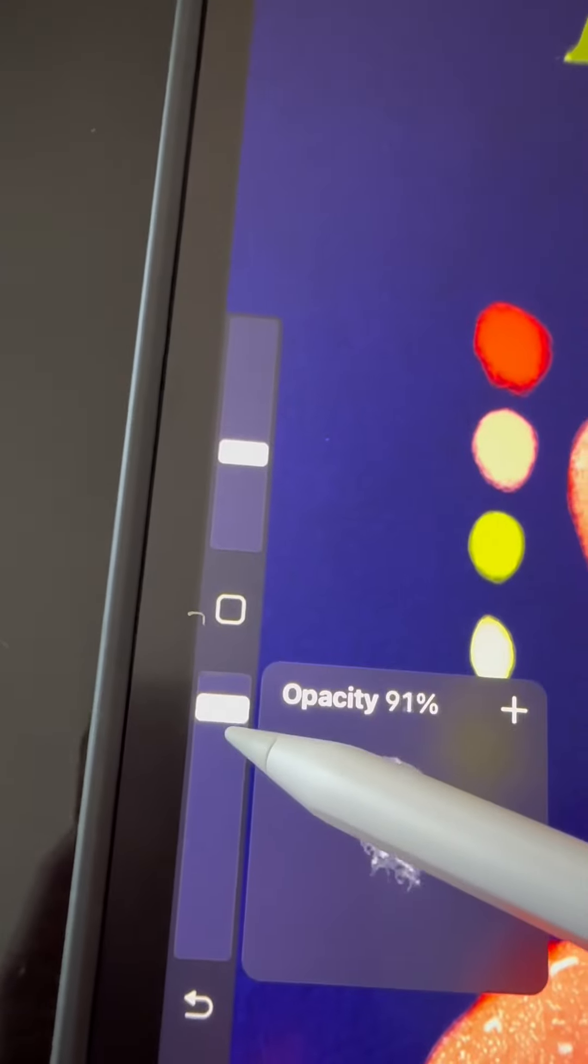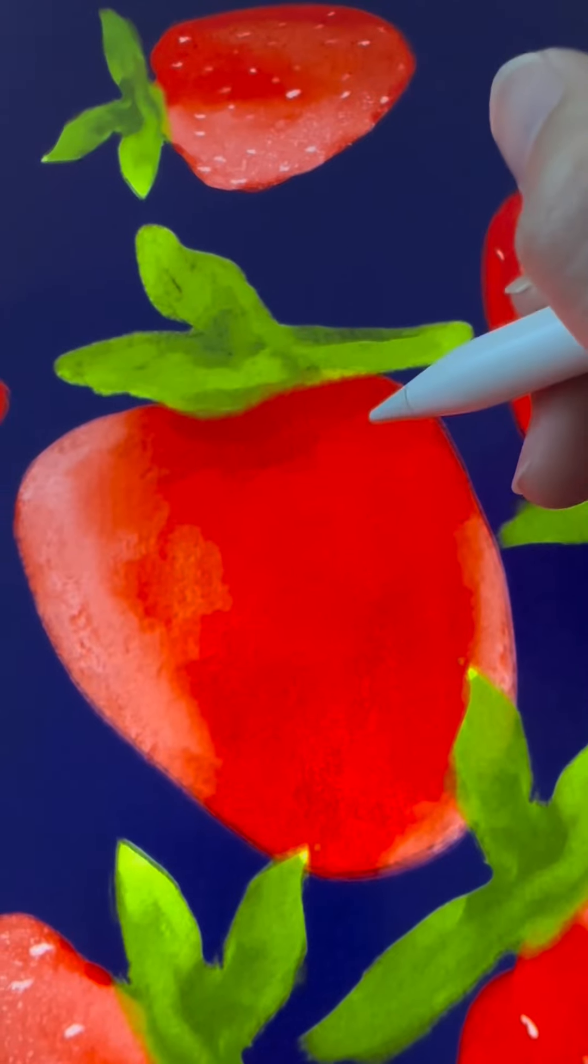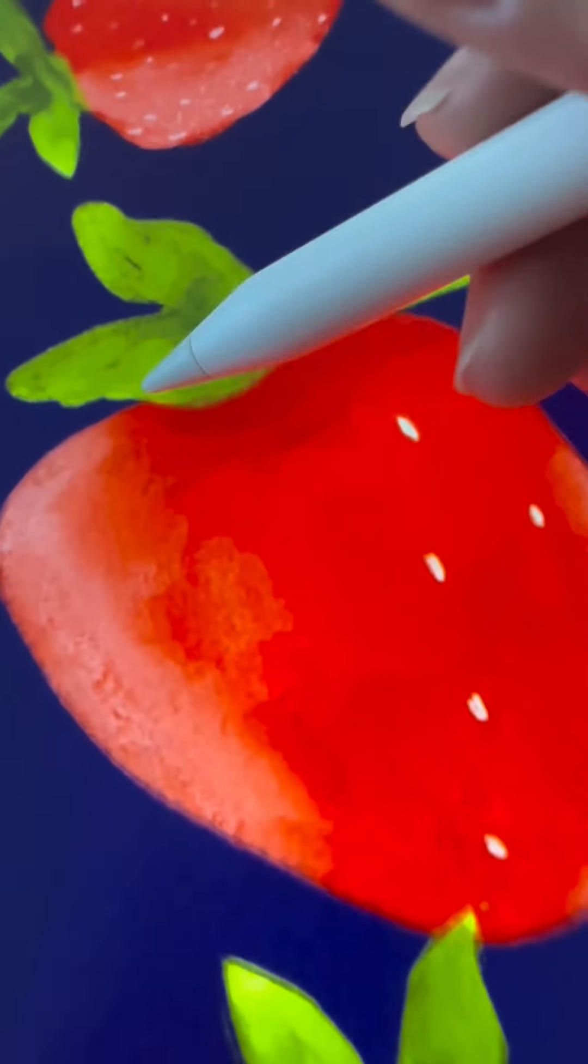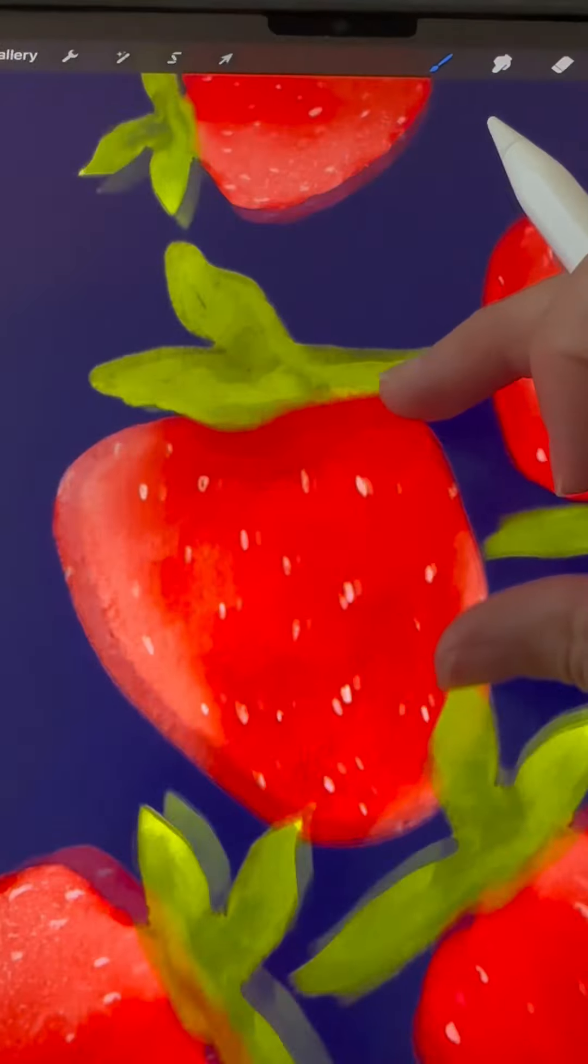For the final step, use a pure white with lower opacity and add some white dust for the seeds. And you're done.